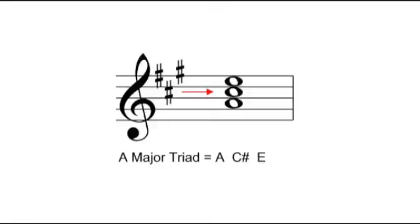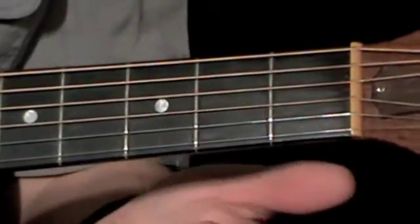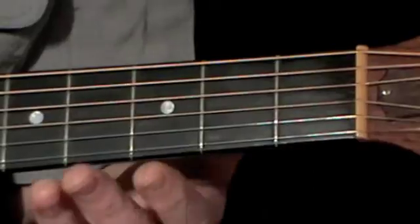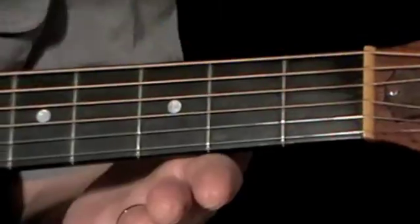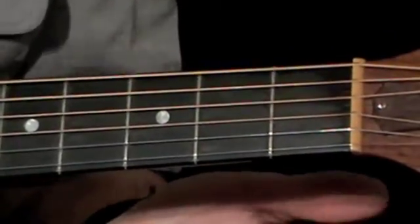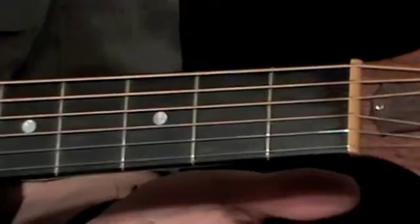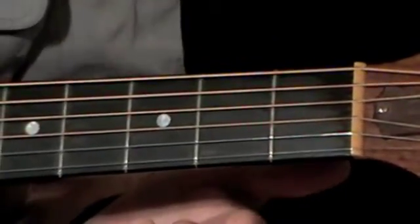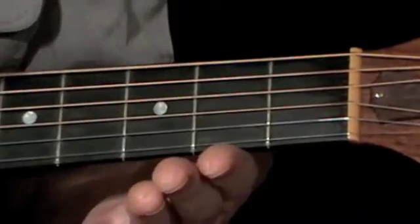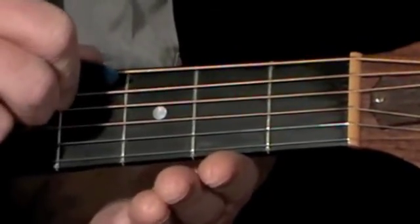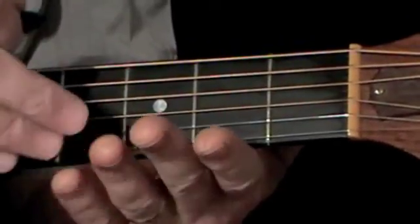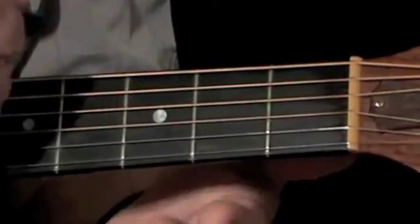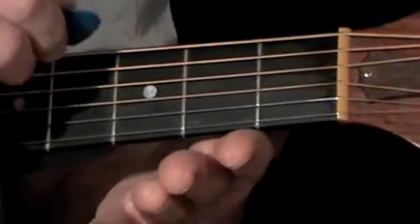Now to find these notes on the fretboard. Supposing I want to create from first principles a chord shape for A major up this end of the fretboard. I start by playing my sixth string — what note is that? It's an E. Is that one of the three notes I need in this triad? It is, so I can just leave that open. Now the next string — what note is that? It's an open A, which is included in our triad of A, C sharp, and E. So we needn't put any fingering on that; we just leave it open.